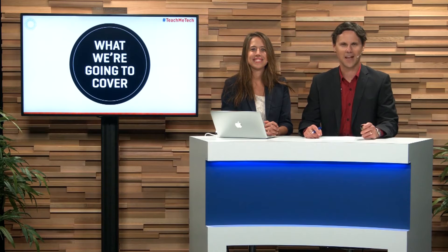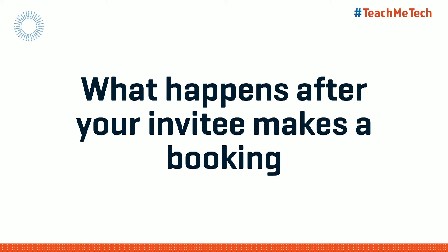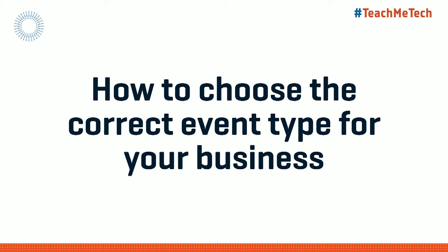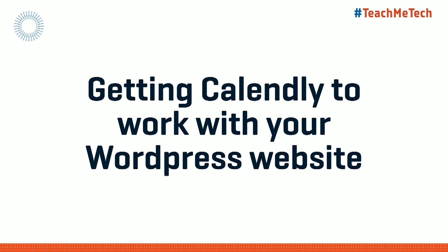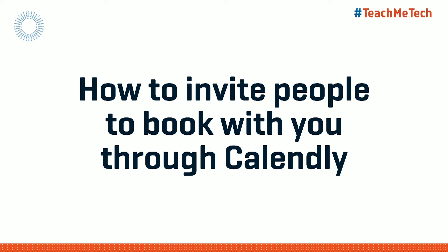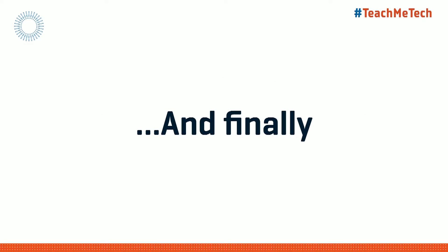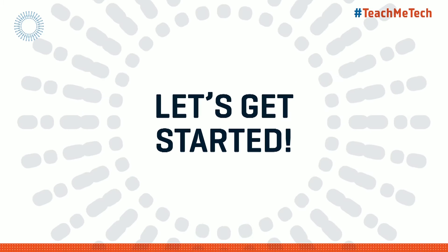Let's take a look at what we're going to cover on today's episode. First, a quick recap of Calendly and why we recommend it for your business. What happens after your invitee makes a booking. How to add team members and availability to a single booking calendar. How to choose the correct event type for your business. How to schedule events with multiple attendees. Getting Calendly to work with your WordPress website. How to invite people to book with you. Ideas to integrate the booking process into your current business. And finally, some examples of how we use Calendly in our own businesses.